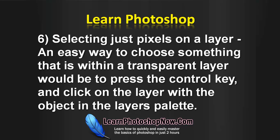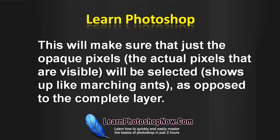Six, selecting just pixels on a layer. An easy way to select something within a transparent layer is to press the Ctrl key and click on the layer within the object in the layers palette. This will ensure that just the opaque pixels — the actual pixels that are visible — are selected, shown as marching ants, as opposed to the complete layer.